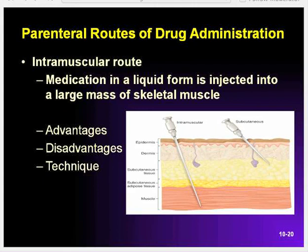When a drug is given by the intramuscular route, a medication in liquid form is injected into a large mass of skeletal muscle. Sites commonly used for pre-hospital care include the arm — specifically the deltoid — and the mid-lateral thigh, the vastus lateralis muscle. The injection is usually made with a longer needle than that used for a subcutaneous injection. A larger volume can be given by the IM route than by the subcutaneous route. The onset of action is faster than the subcutaneous route due to the muscle's blood supply and large absorbing surface. Epinephrine is an example of a drug that can be given by this route.